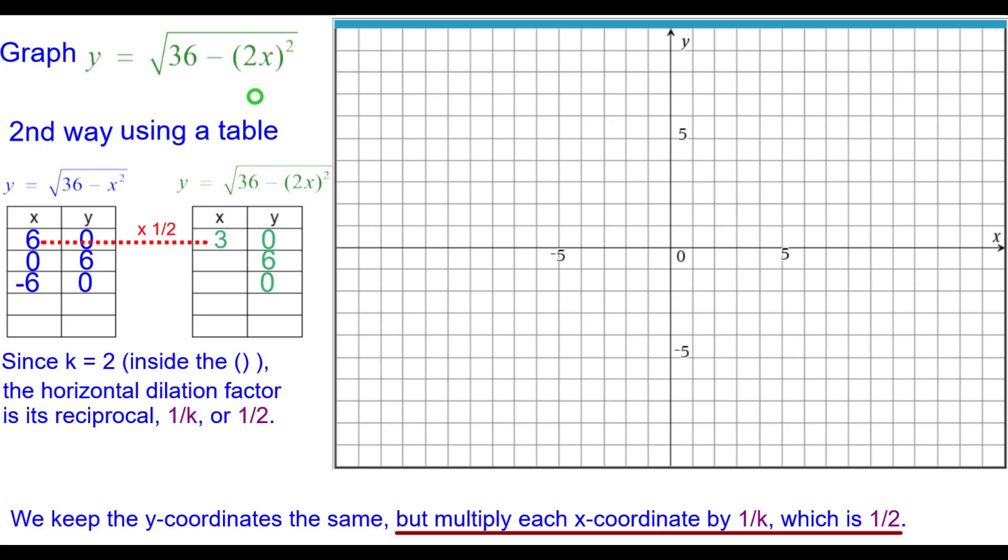For example, 6 times a half is 3, so we plot 3, 0. 0 times a half is still 0, so 0, 6. And half of negative 6 is negative 3, negative 3, 0.